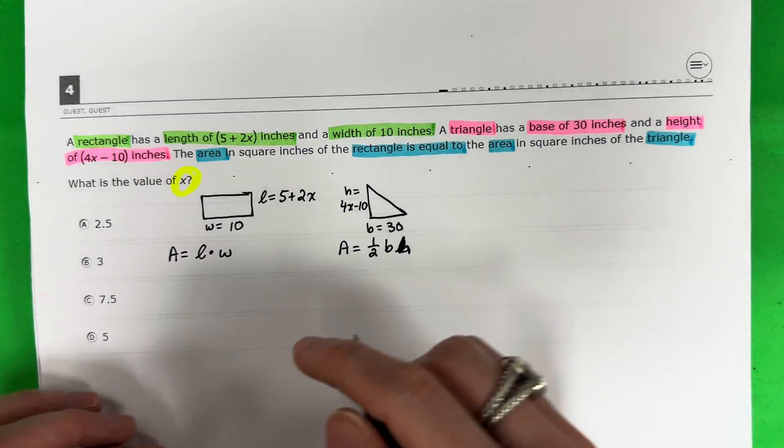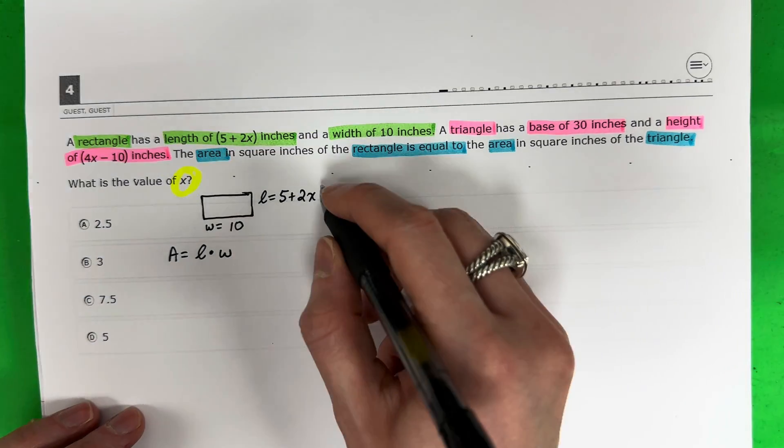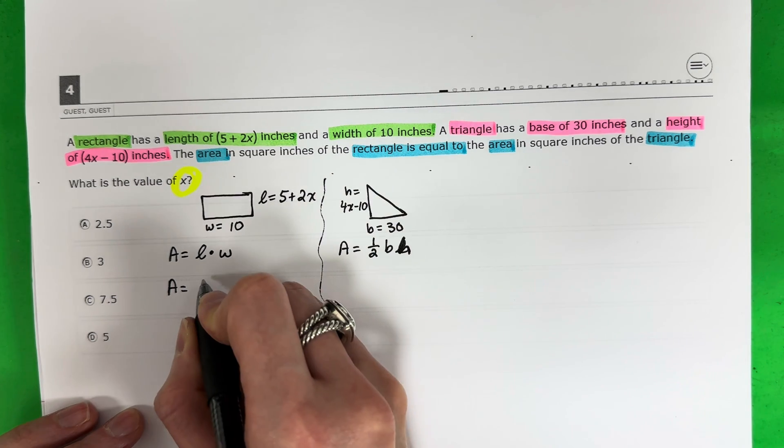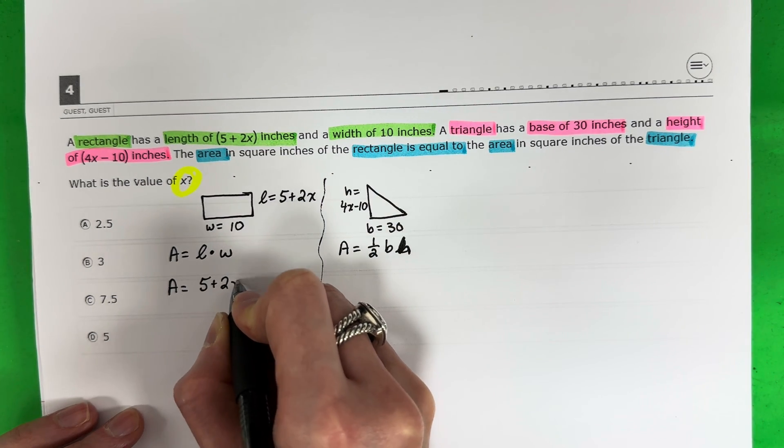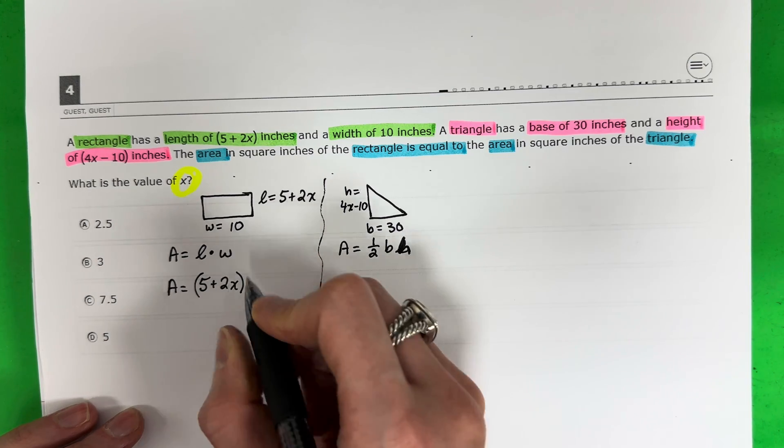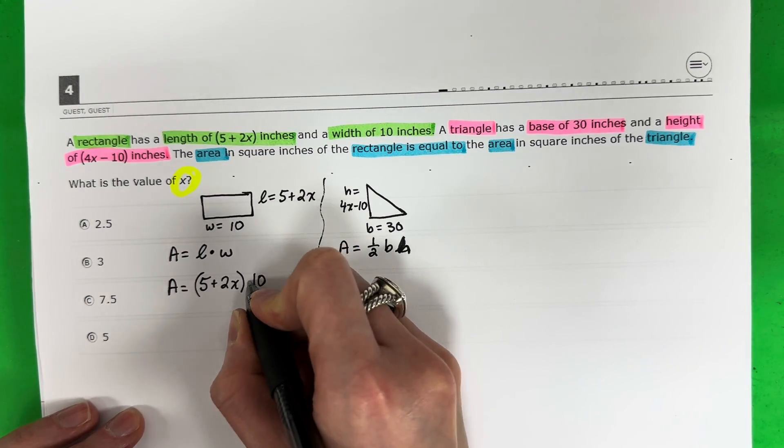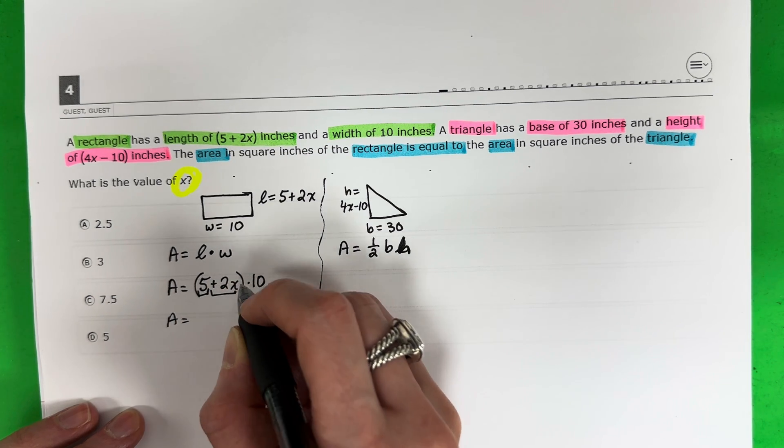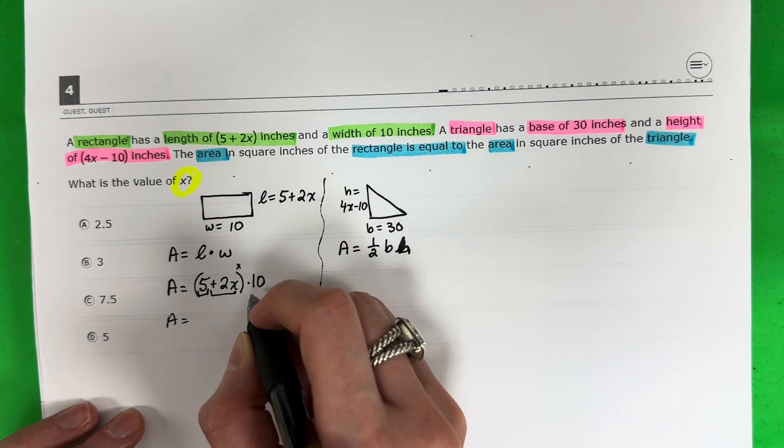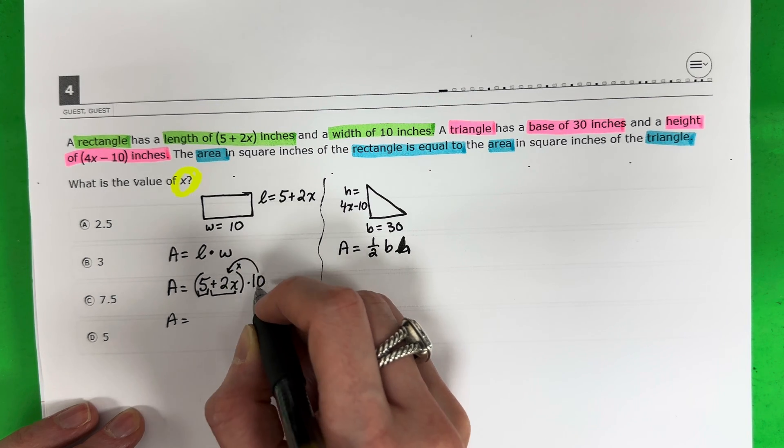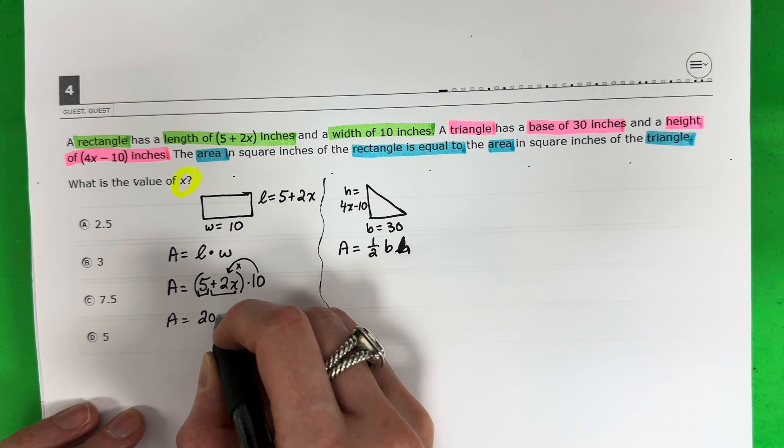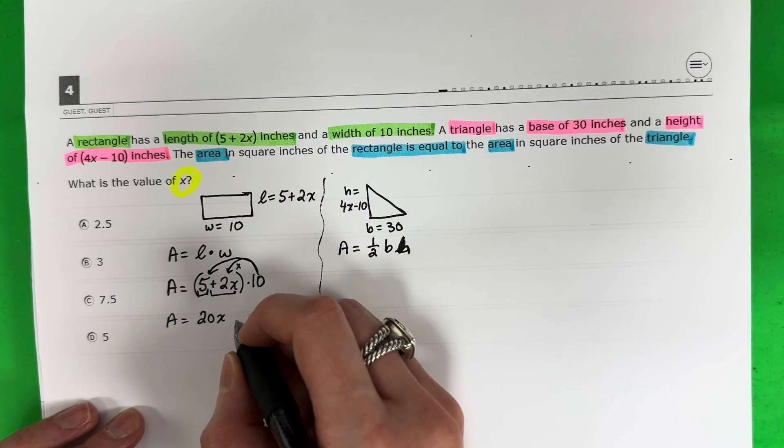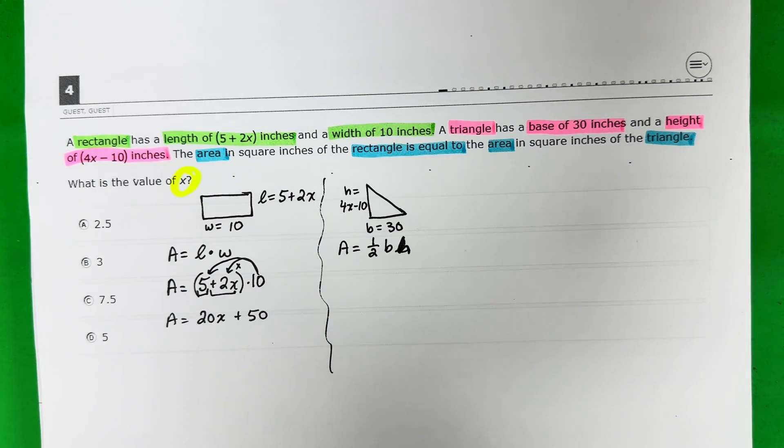So let's go ahead and find the areas first. So I have A equals length is 5 plus 2x, I'll put that in parenthesis, times the width is 10. So we're going to go ahead and distribute here. I have 1, 2 parts, parenthesis is multiply. I'm going to do 10 times 2x. 10 times 2x is 20x. And again, 10 times 5. 10 times 5 is positive 50. There's my area for that.